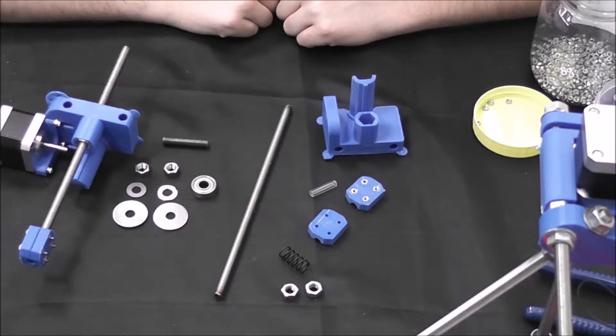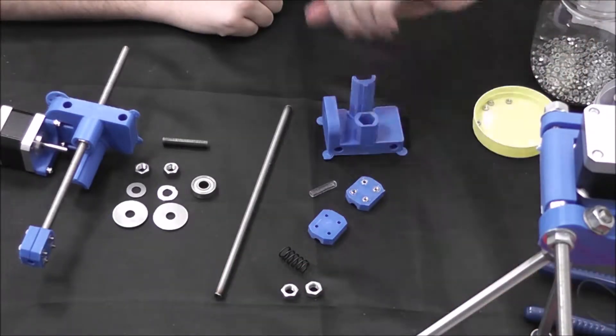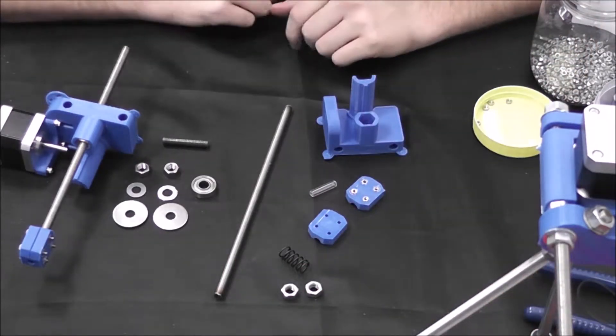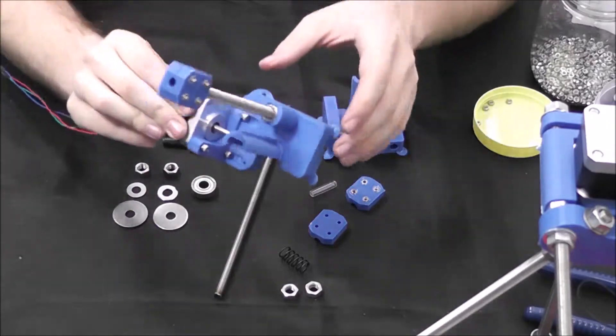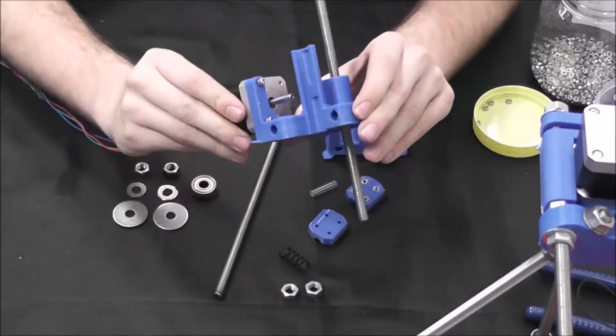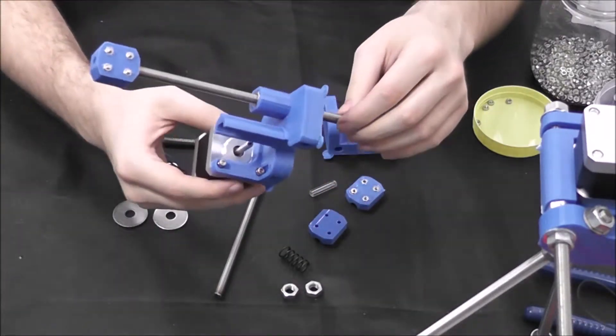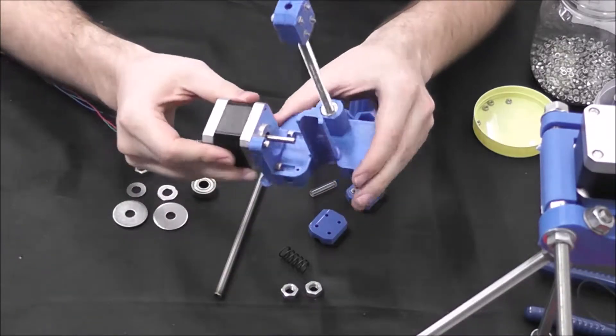Now that we have the Z smooth rods on with the linear bearings, we're going to go ahead and put together the X idler and X motor mount. We've already gone ahead and done the X motor mount just because it's fairly straightforward and it's pretty much the exact same as the idler minus the motor.